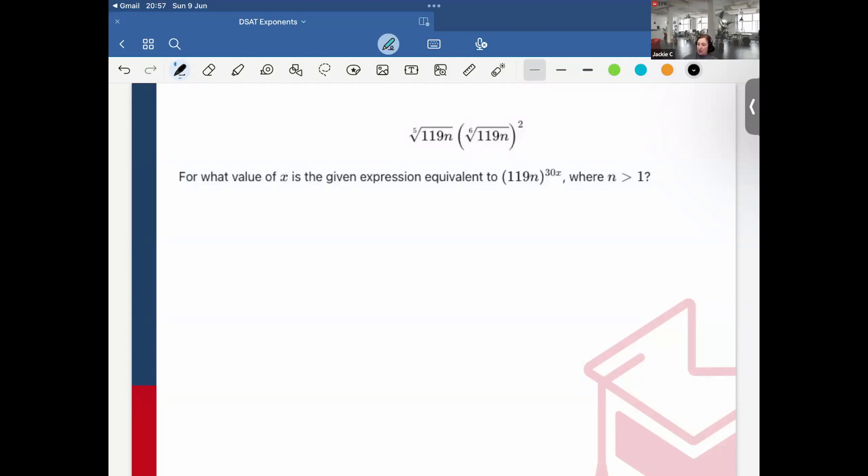So first, the 5 here would just become 119n raised to the 1 over 5. Same in here. I can express that as 119n raised to the 1 over 6. This is all squared, so I can also distribute this here.